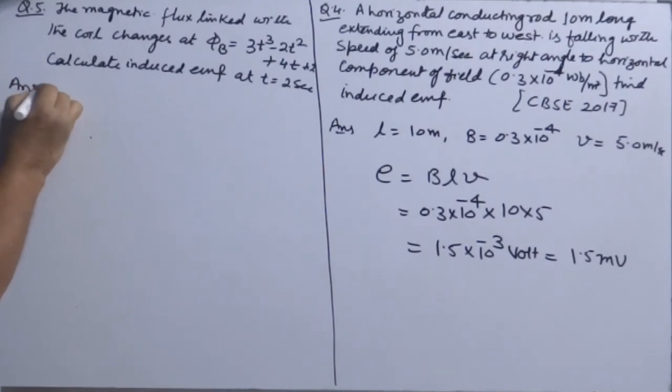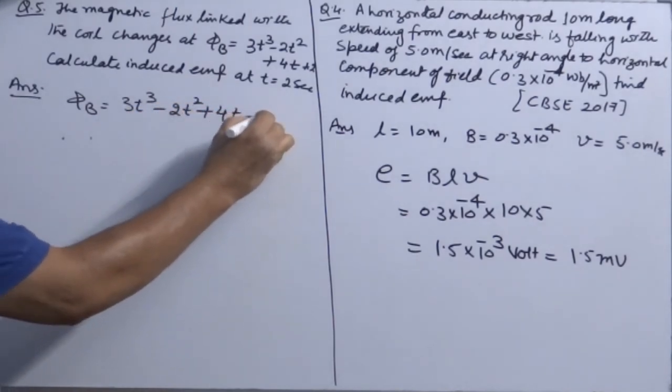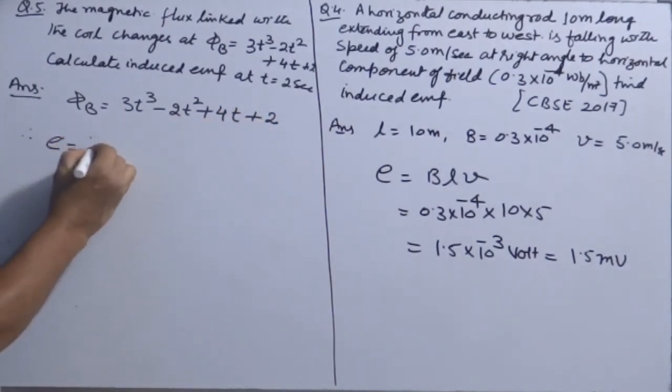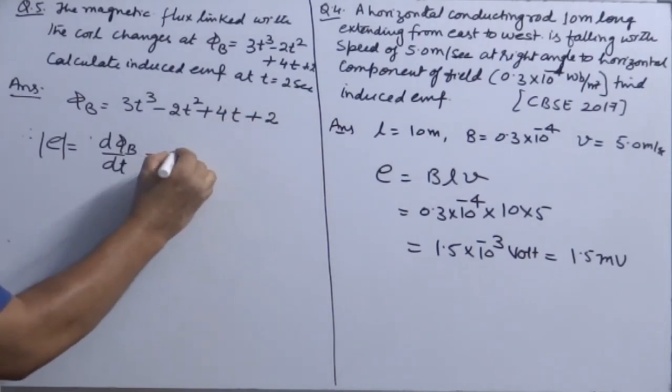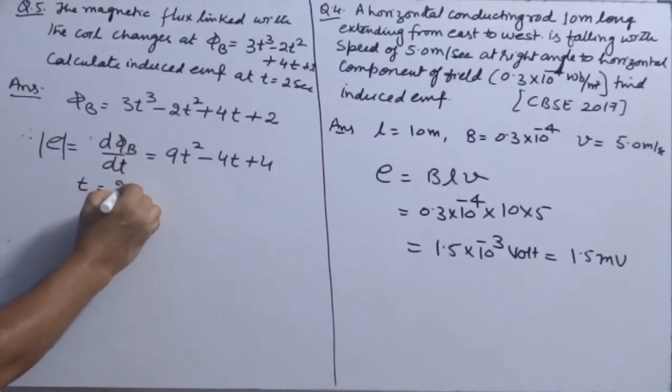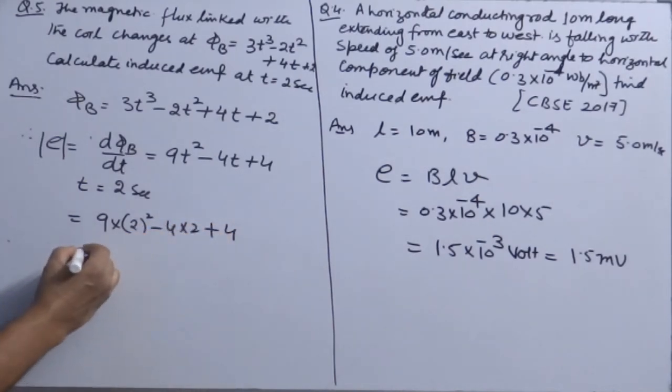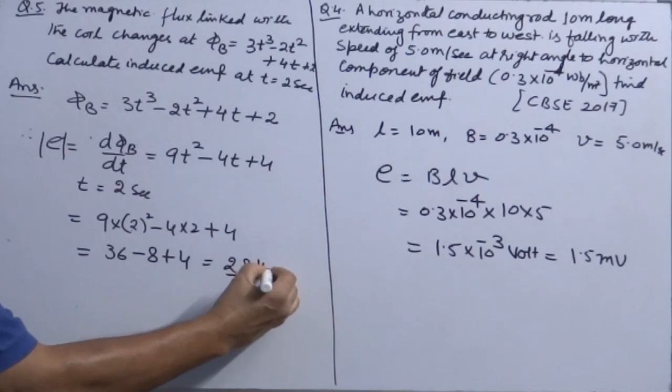Next question is question number 5. Magnetic flux equation is 3T cubed. It is a function based question. So obviously you have to use differentiation for finding induced EMF. Magnitude of induced EMF, d phi B over dT. So differentiate this. 9T squared minus 4T plus 2 is 0. And at what time? T is equal to 2 seconds. So put it here. 9 into 2 squared minus 4 into 2 plus 4. Answer 36 minus 8 plus 4. This is minus 4, 28. Induced EMF, it is volt.